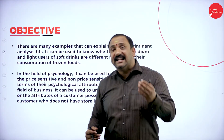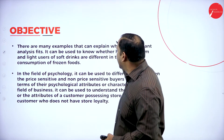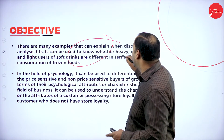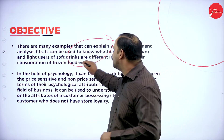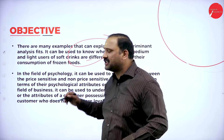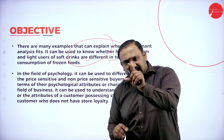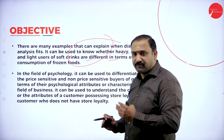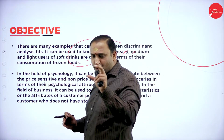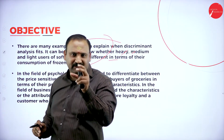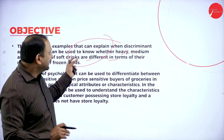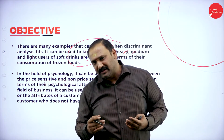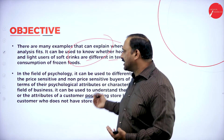There are many examples that can explain when discriminant analysis fits. It can be used to know whether heavy, medium, or light users of soft drinks are different in terms of consumption of frozen foods. What is the connection and the variation factor — the link that one has to understand in terms of the connectivity? Are both of them related? Are both of them on the same page?